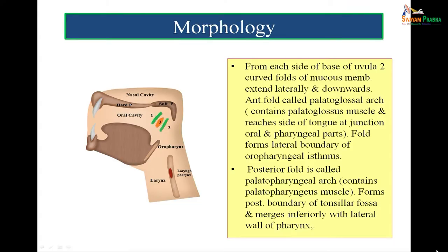From each side of the base of the uvula, two curved folds of mucous membrane extend laterally and downwards. The anterior fold is called the palatoglossal arch. It contains the palatoglossus muscle and reaches the side of the tongue at the junction of its oral and pharyngeal parts, forming the lateral boundary of the oropharyngeal isthmus. The posterior fold is called the palatopharyngeal arch. It contains the palatopharyngeus muscle, forms the posterior boundary of the tonsillar fossa, and merges inferiorly with the lateral wall of the pharynx.